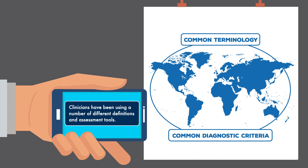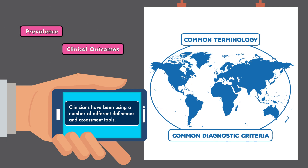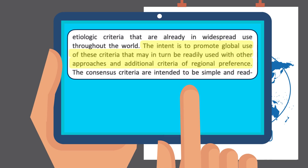They did this because clinicians have been using a number of different definitions and assessment tools, making it difficult to understand the true prevalence of malnutrition, its influence on clinical outcomes, and the cost it presents to healthcare systems. Still, the group makes it clear that the intent is to promote the global use of these criteria that may in turn be readily used with other approaches and additional criteria of regional preference.